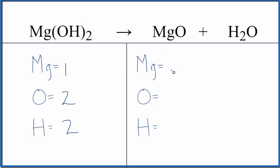Products, we have one magnesium, and then oxygen, we have one here, but be careful because there's one here with the oxygen as well. You have to count both of those. And then hydrogen, we have two of those.